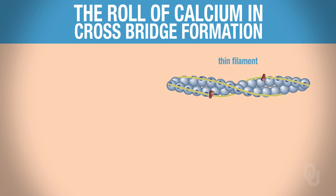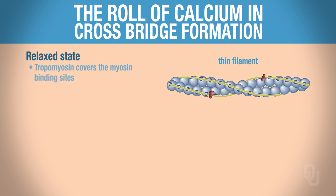Let's look at the role of calcium in forming crossbridges. The first configuration for the thin filament is the relaxed configuration. In the relaxed configuration, note the position of the tropomyosin — tropomyosin covers the myosin binding sites. If tropomyosin is covering your myosin binding sites, a crossbridge cannot form, and hence contraction cannot take place.